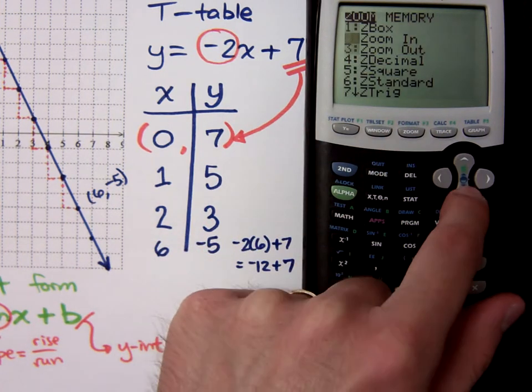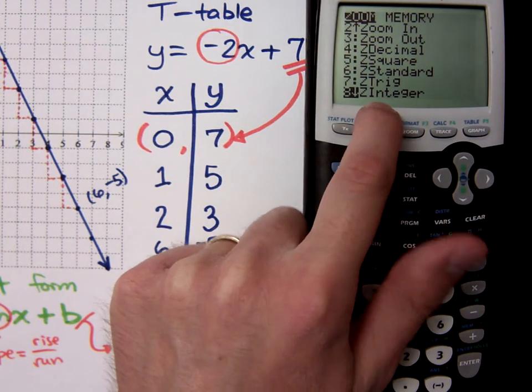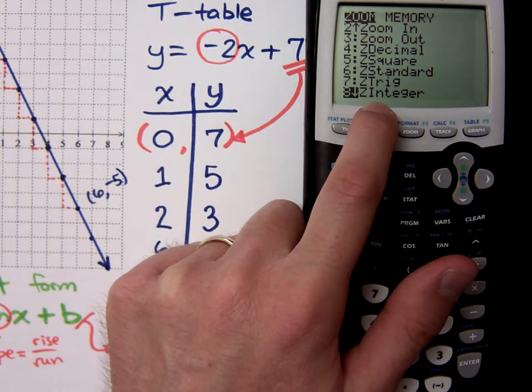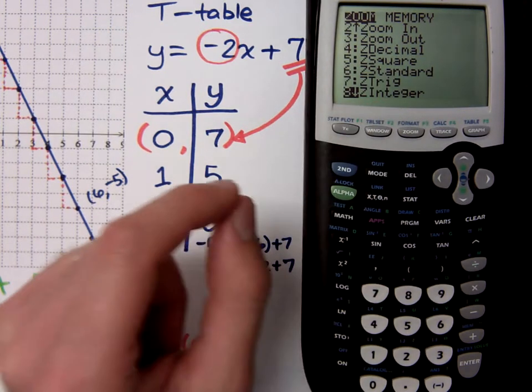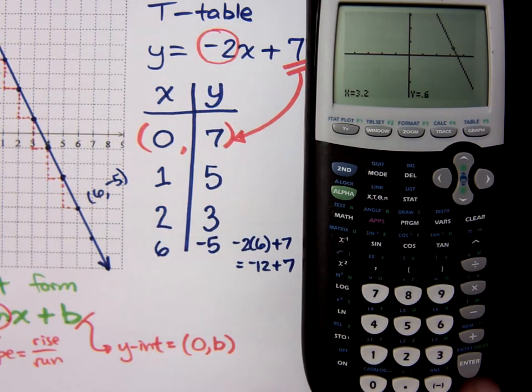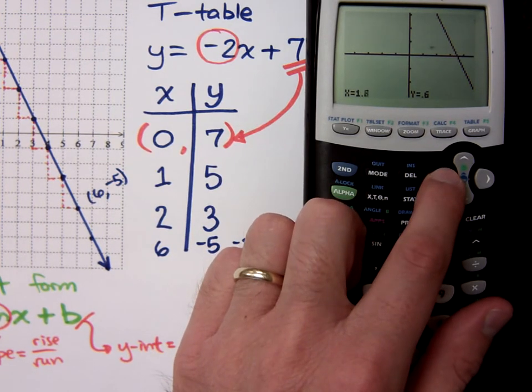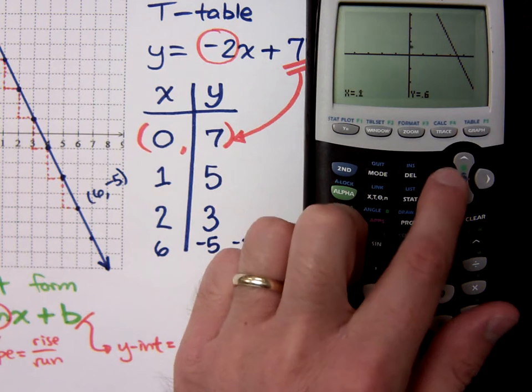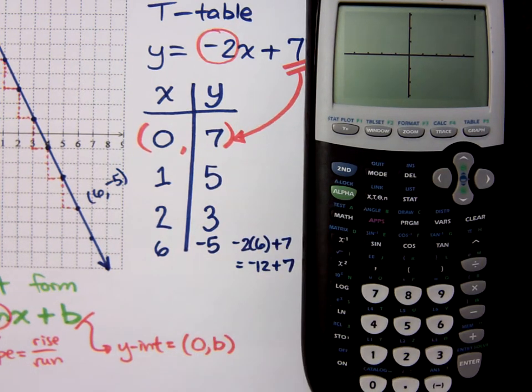Another zooming feature you have here, if you go down, is Z-integer. Instead of making each pixel, each dot here, to be worth 1 tenth, it makes each pixel to be worth 1 unit. Now, of course, it all depends on where you're zooming in from. I'm going to have it zoom in at the origin.